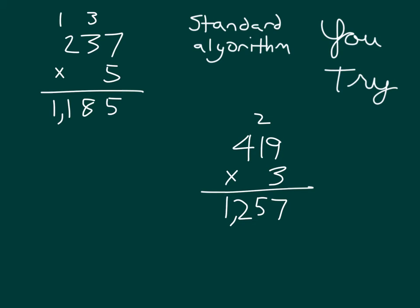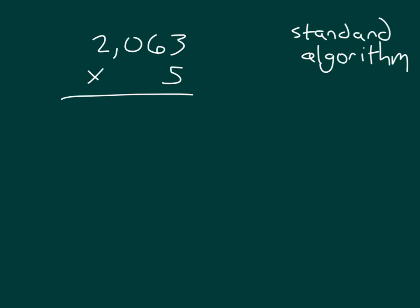Do remember that the answer to a multiplication problem is called the product. Here we're asked to find the product using the standard algorithm. We'll start in the 1s place. 5 times 3 gives us 15 1s. We place the 5 and regroup the 1. Within the 10s place, we have 5 times 6 10s, which is 30 10s, plus 1 10 is equal to 31 10s, so we place the 1 and regroup the 3 into the 100s place. 5 times 0 is 0, plus 3 is 3. 5 times 2 is 10. Therefore, our answer is 10,315.